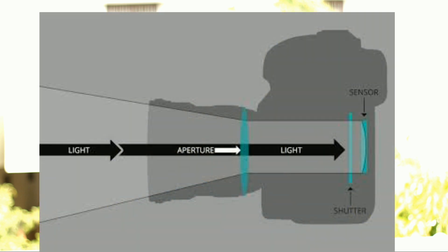So let me explain what exactly aperture is. Aperture is an adjustable opening in the lens which allows light into the camera. If the aperture is wider, more light enters the camera. If the aperture is smaller, less light enters the camera.